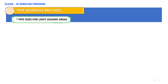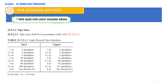Pipe sizes for light hazard areas. As per NFPA 13, pipe sizes shall be in accordance with the table as shown on your screen. For steel pipes: if we have two sprinklers, we can use one-inch pipe; for three sprinklers, we can use one and one-quarter inch pipe (32 mm); for up to five sprinklers, we can consider 40 mm (one and a half inch) pipe; and for 10 sprinklers, we can use two-inch pipe.